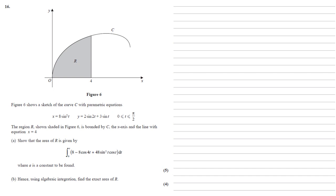For part A we need to show that the area of R is given by the integral between 0 and A of 8 minus 8 cos 4t plus 48 sine squared t cos t dt, where A is a constant to be found.